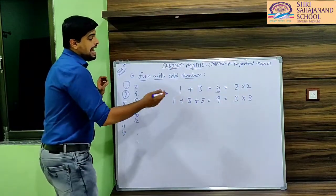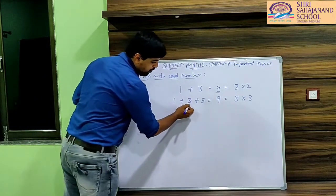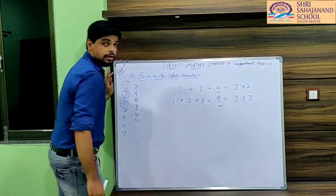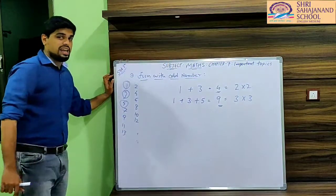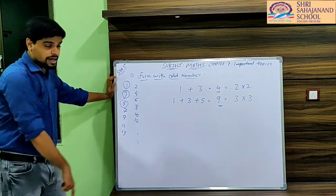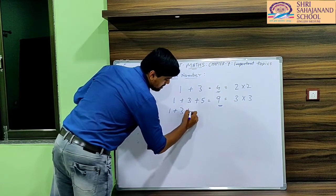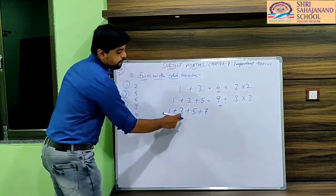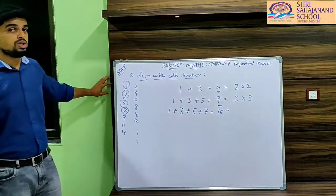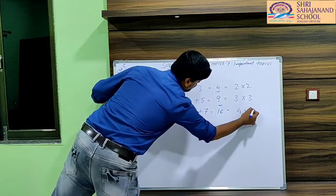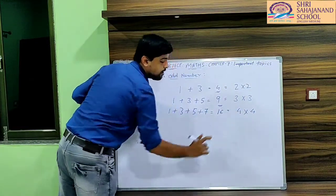In the next step, add one more odd number — the next odd number is 5. So 1 plus 3 is 4, and 4 plus 5 is 9. We can write 9 as 3 × 3. The pattern is: if there are 3 odd numbers, we multiply 3 with 3. What will be the next pattern? The next odd number is 7. So 1 plus 3 plus 5 plus 7: 4 plus 5 is 9, and 9 plus 7 is 16. We write 16 as 4 × 4, because there are 4 odd numbers.